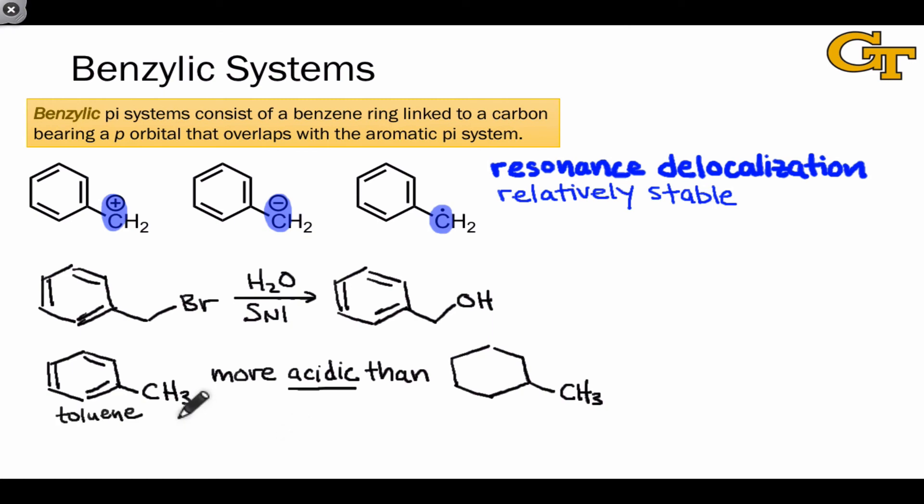Toluene is also susceptible to radical halogenation reactions using NBS. Previously, we've seen NBS as a reagent that can engage in allylic halogenation, but the benzylic position is analogous to the allylic position, as we've seen.